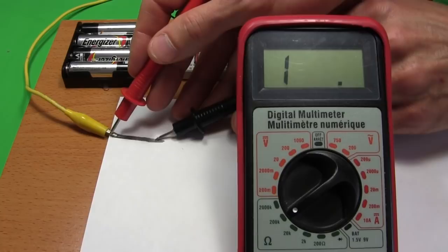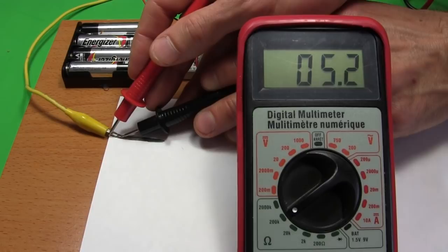If I touch it here instead, you can see the resistance is higher, around 32 kOhms. The longer the length of graphite that the electricity has to travel through, the higher the resistance.